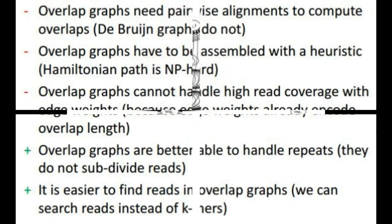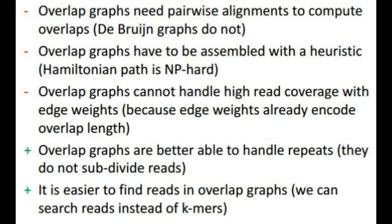Now the main differences between overlap and de Bruijn graph: overlap graphs need pairwise alignments to compute the overlaps, de Bruijn graphs do not require that. Overlap graphs have to be assembled with a heuristic because Hamiltonian path is NP-hard. And the overlap graph cannot handle high read coverage with edge weights because the edge weights already encode the overlap length.